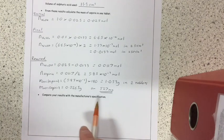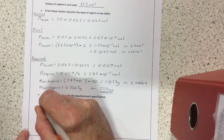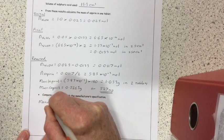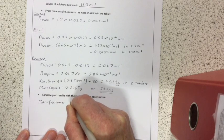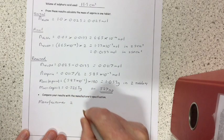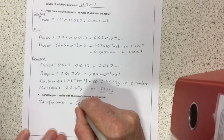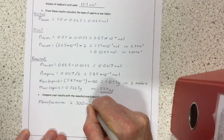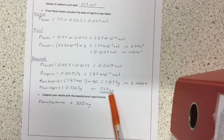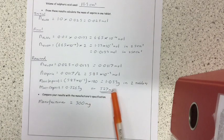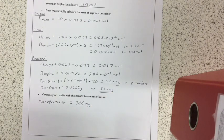Okay, finally it says, compare your results with the manufacturer's specification. Well, according to the manufacturer, the mass of aspirin in one tablet was in fact only 300 milligrams. So, we had a far higher number than, or at least I had a far higher number than we should have got.